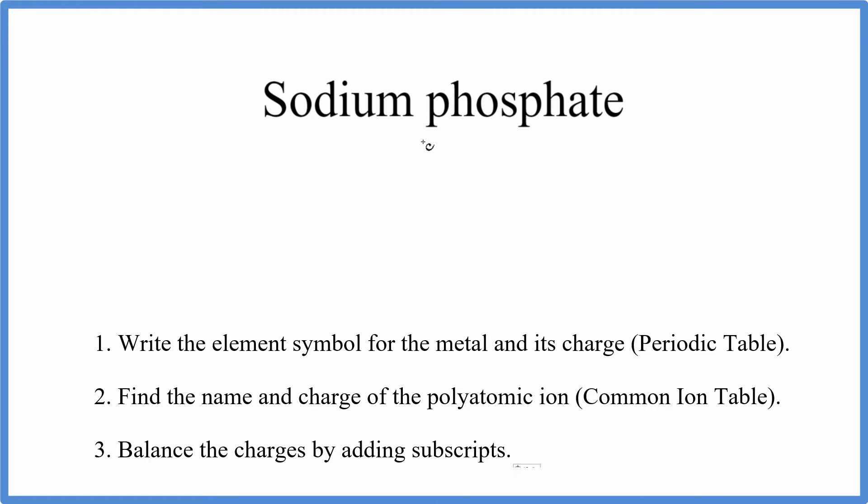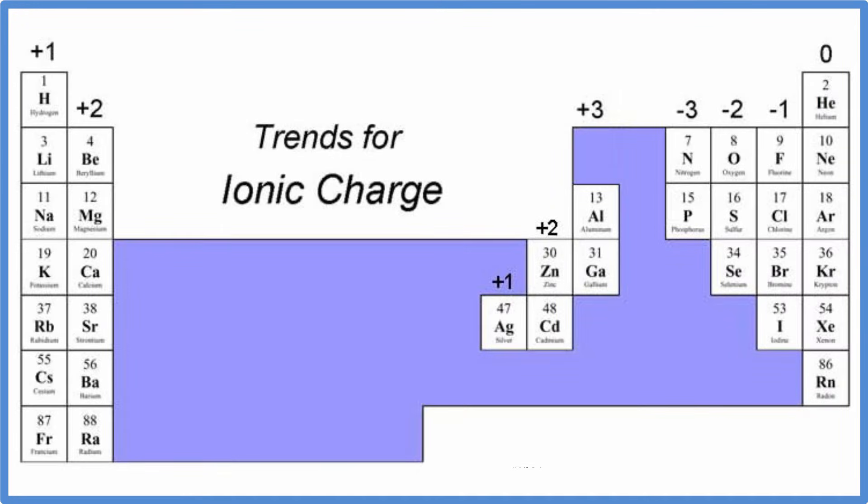For sodium phosphate, we have a metal, and then our group of nonmetals. We know that it has A-T-E here. So we go to the periodic table, we look up sodium, we know that's NA, and it has a plus 1 charge.